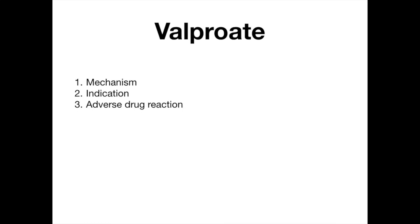Let's start with valproate, also known as valproic acid. The mechanism of valproate is that we're going to inhibit or decrease the activity at voltage-gated sodium channels. In addition to that, we're going to increase the activity of GABA. Think of sodium as excitatory — when you decrease voltage-gated sodium channels, we decrease the excitation that causes seizures. GABA is an inhibitory neurotransmitter, so if we increase activity of GABA, we're increasing inhibitory activity, which tones down the excitation in the brain that causes seizures.